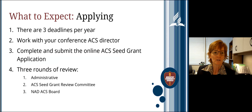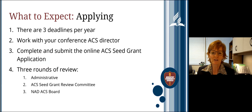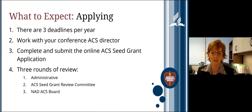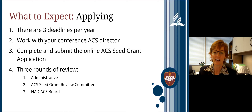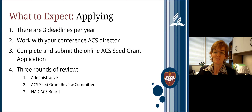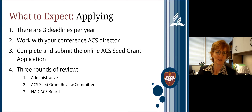There are three ACS seed grant deadlines per year, listed on the seed grant web page. You should work with your conference ACS director throughout the process — share your project early, discuss it with them, see if they feel it's a good candidate, and discuss the budget to confirm whether the conference can make a financial contribution. Request the letter of recommendation from the director early, and ask that they also secure a letter from one of the conference administrators, as these must be submitted with your application.